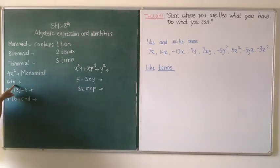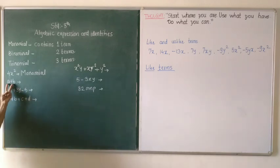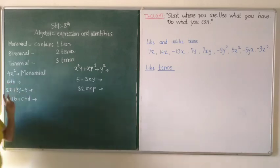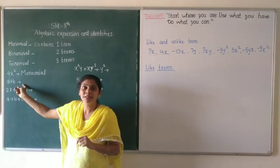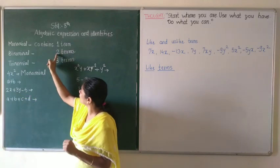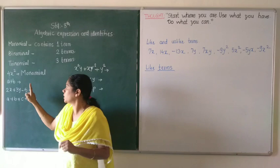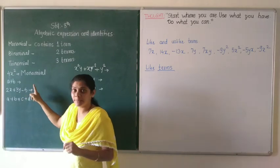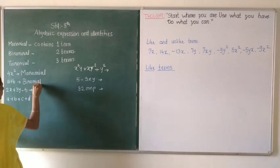Next is a plus b. There is one mathematical operation — addition — so how many terms? Two terms. Yes, correct. When the expression contains two terms it is known as binomial. So it is a binomial.